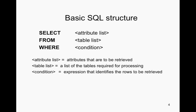Your basic SQL structure is your SELECT. When you're trying to find information on a database, in the SELECT column, which is an attribute list, this is where you're going to select something like a student ID inside a student table. And then FROM is where you're going to put the table, which is going to be student. So you'll select student ID because that's what you're wanting — you're wanting the student IDs, and you're getting that from a student table.